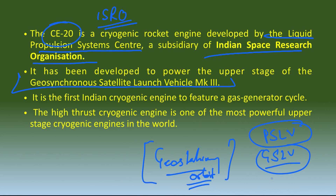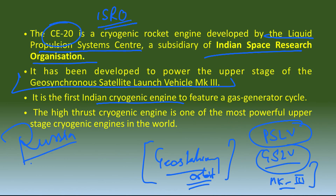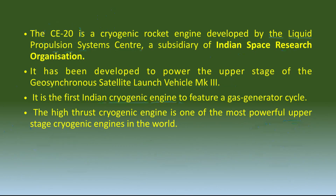Humare future ambitious programs — for example human space flight program jise humne Gaganyaan ka naam diya hai, aur interplanetary expeditions — un ke liye hume aur powerful engines chahiye. Woh GSLV Mark 3 se hi complete hoga. Humne pehle yeh technique Russia se li thi. GSLV D3 jo tha, usme cryogenic engine tha jo humne use kara. But woh mission April 2010 mein fail ho gya tha — uski joh third stage thi, cryogenic upper stage, woh fail ho gai thi. But after that India tried to develop on its own, aur yeh bahut successful raha — GSLV Mark 3.